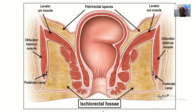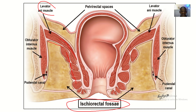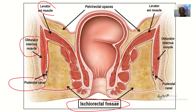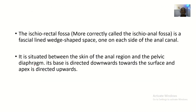Looking at the ischio-rectal fossa: the medial border is formed by the levator ani muscle and the external anal sphincters. The apex points upward while the base is downward. The lateral border is formed by the obturator internus muscle and the obturator fascia. Within the obturator fascia is the pudendal canal, also called the Alcock's canal.